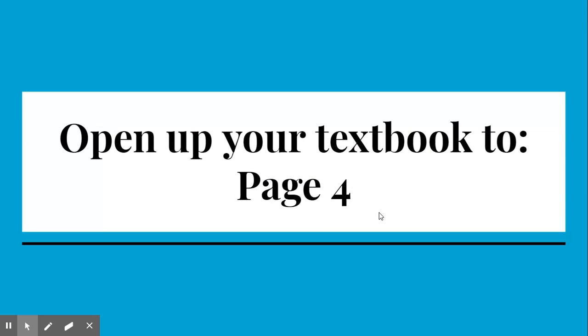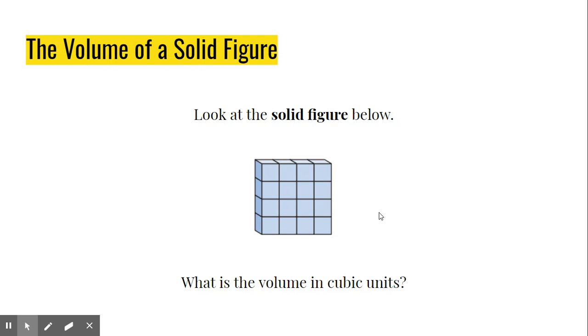So open up your textbook to page four, and we'll basically go over some notes here. You're welcome to pause the video to get your book if you don't have it right there with you. All right. So on page four, you'll notice this first figure here. It says, look at the solid figure below, and what is the volume in cubic units? Well, finding the volume this way is very simple. All you have to do is count up the unit cubes, which are listed here.